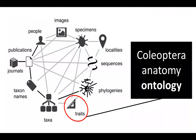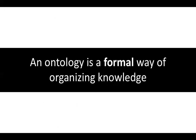The main goal of the project is, of course, to produce the anatomy ontology for beetles, but what is an ontology, and how is it going to help fix this weak link? Put simply, an ontology is a formal way of organizing information. When we say formal in this context, it means that information is organized and presented in such a way that it can be understood by humans, but also processable by machines.